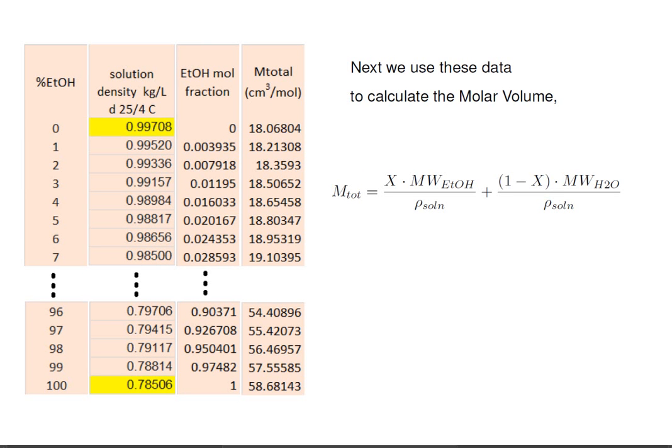Next, we'll use these data to calculate the molar volume and add another column to the data set. In the first term, we have the fraction of ethanol times the molecular weight of ethanol in grams per mole, divided by the density of the final solution at that mole fraction in grams per cubic centimeter — making the first term's units cubic centimeters per mole. The second term does the same for water: the mole fraction of water is 1 minus x, multiplied by its molecular weight and divided by the overall solution density at that point. The sum of these gives the overall molar volume at the particular point, called m-tote.